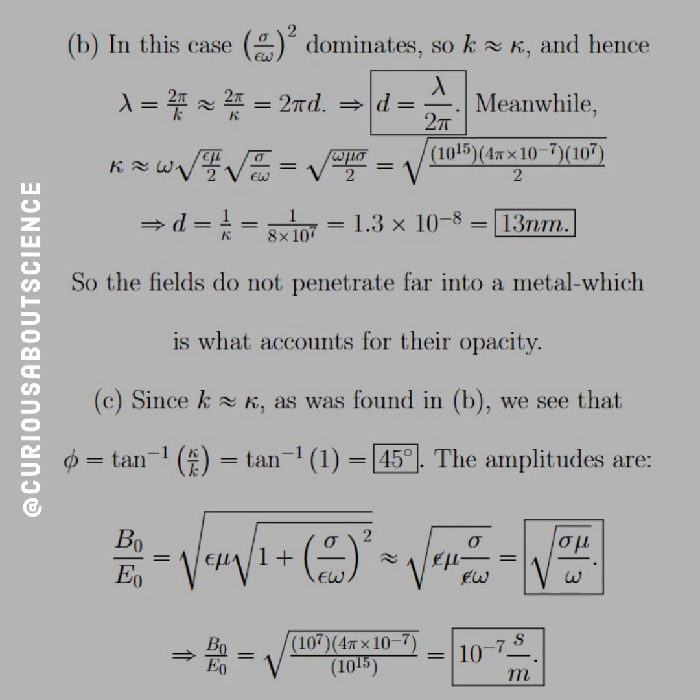And what we see here is that from that, we have lambda is equal to 2 pi over k, which is approximately 2 pi over kappa, which we use to find the skin depth. So, what this is saying is that lambda is approximately 2 pi times skin depth. Okay, cool. So, we know that d is equal to lambda over 2 pi. Pretty cool. So, meanwhile,